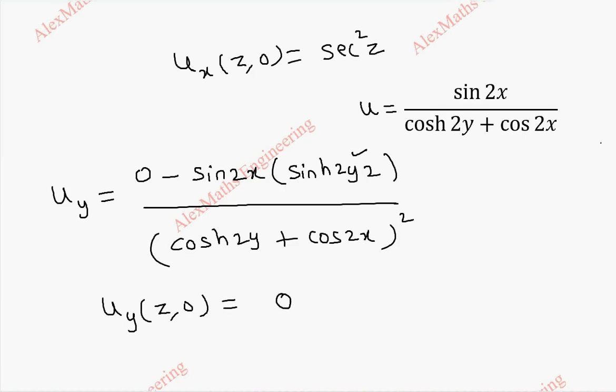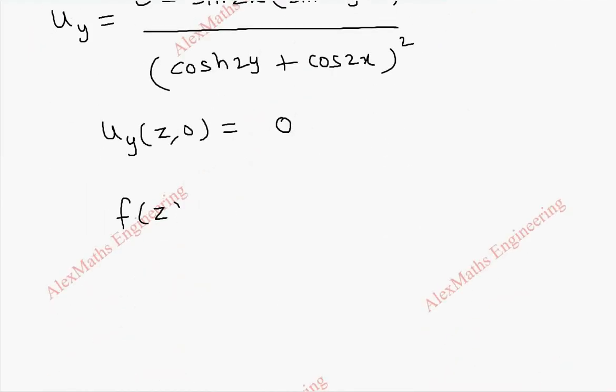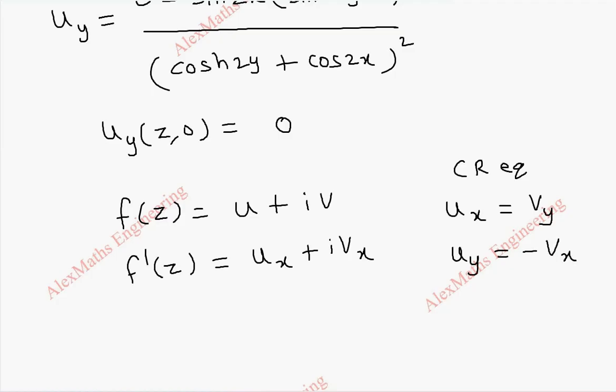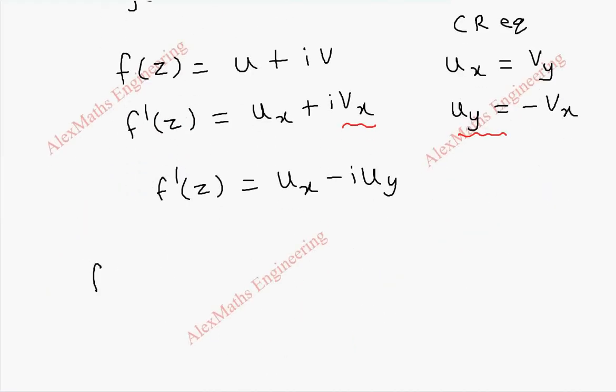So finally f of z is u plus iv. And f dash of z is u_x plus iv_x. From CR equations u_x equal to v_y and u_y equal to minus v_x. And this v_x can be replaced with minus u_y here. So f dash of z becomes u_x minus i u_y. From this by using Milne Thomson method, f of z can be written as integral u_x of z comma 0 dz minus i integral u_y of z comma 0 dz plus c.